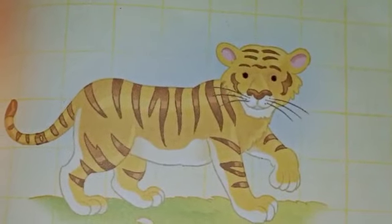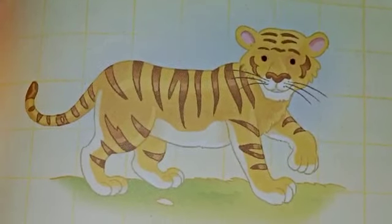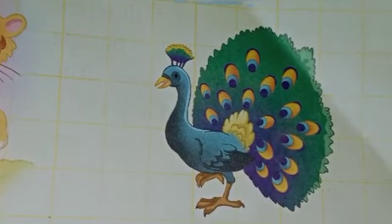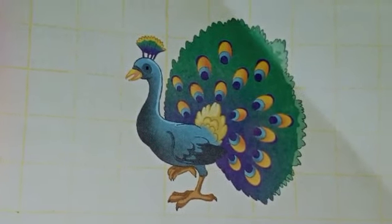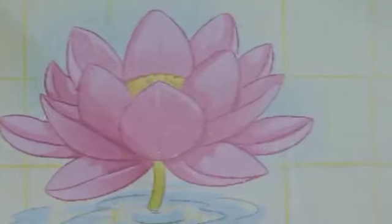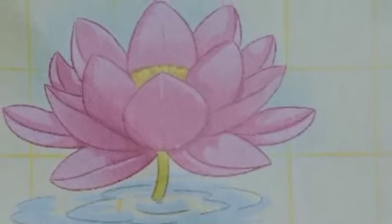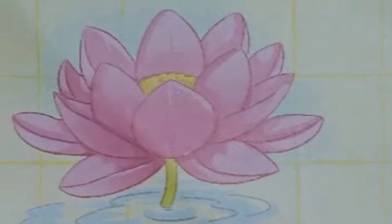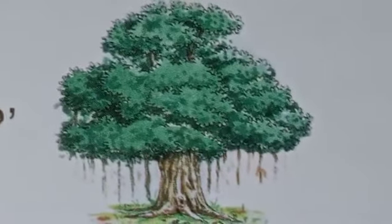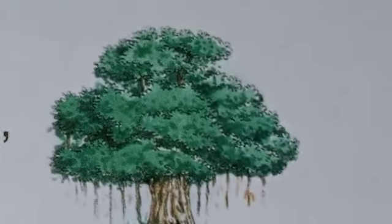Catty asked, "What's your national animal?" Soni replied, "Tiger." Catty asked, "What's your national bird?" Soni replied, "Peacock." Again Catty asked, "What's your national flower?" Soni replied, "Lotus." Now Catty asked, "What's your national tree?" Soni replied, "Banyan tree."